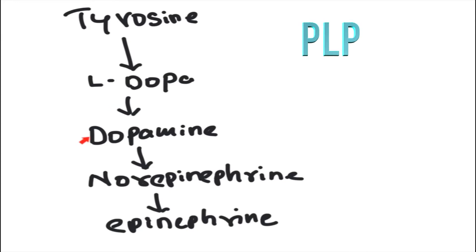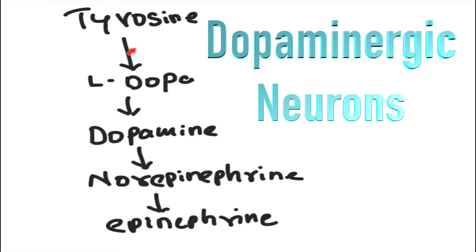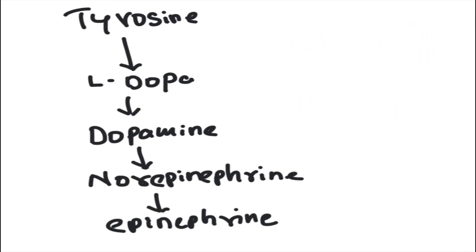All dopaminergic neurons express only tyrosine hydroxylase enzyme and DOPA decarboxylase, which is why their end product is dopamine — and dopamine acts as a neurotransmitter in all dopaminergic neurons.